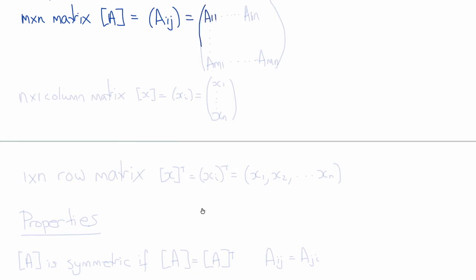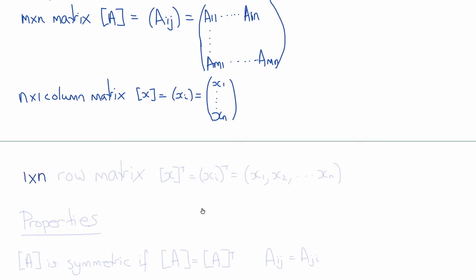The matrix A has components AIJ, where I refers to the row. This matrix goes from A11 to A1N in row 1, through to AM1 to AMN in row M — it has m rows and n columns. Similarly, an n by 1 column matrix X has n rows with components X1 through Xn, and the row matrix X transpose is a 1 by n matrix with one row and X1 through Xn in the columns.